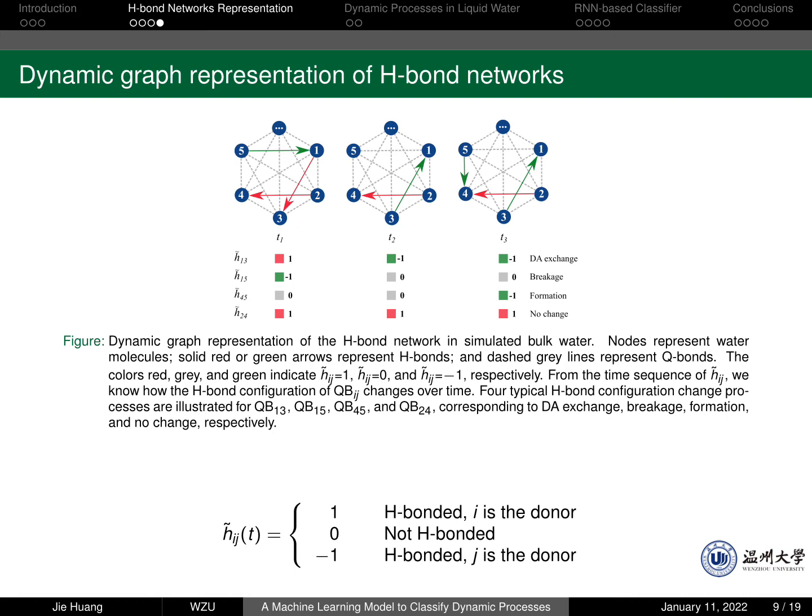In this work, we use graph to represent the connectivity of the hydrogen bond networks for the simulated bulk water system. As you can see from the figure, it is possible for us to distinguish different dynamic processes in liquid water by just analyzing the sequences of h-tilde for any given pair of waters.